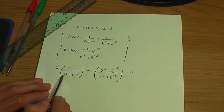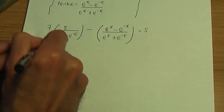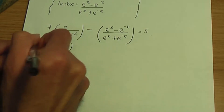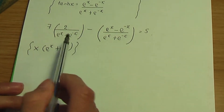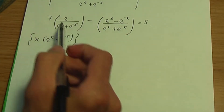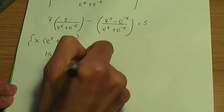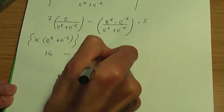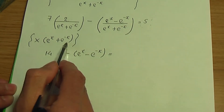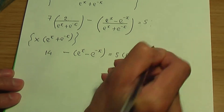I want to get rid of the (e^x + e^{-x}) terms, so let's multiply the entire equation by (e^x + e^{-x}). Doing so gives: 7 times 2, which is 14, minus (e^x minus e^{-x}), equal to 5 times (e^x + e^{-x}).